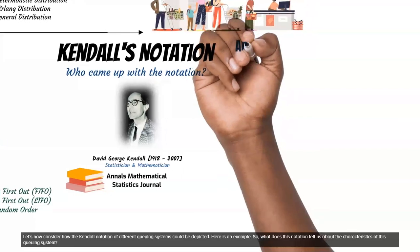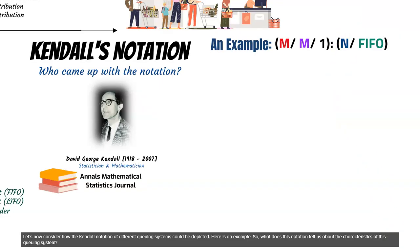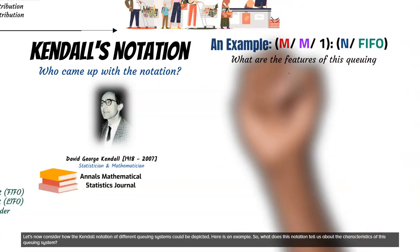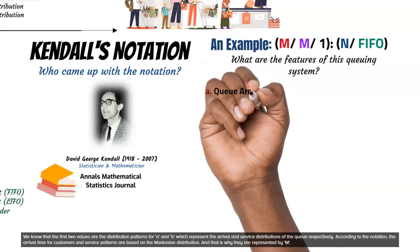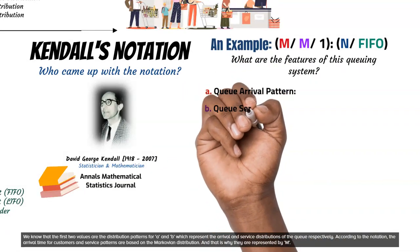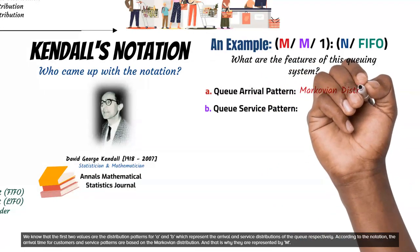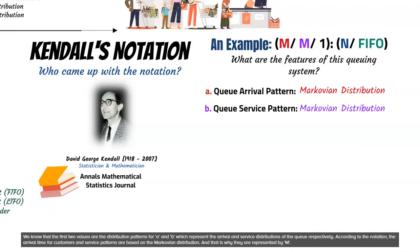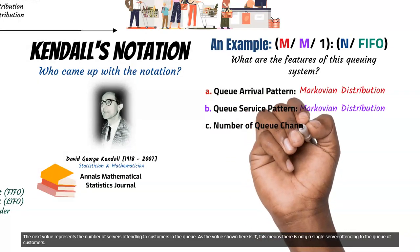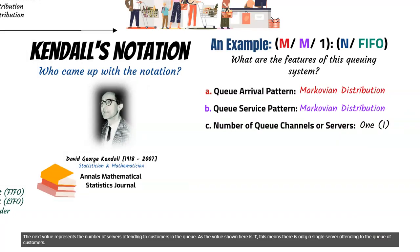Let's now consider how the Kendall notation of different queuing systems could be depicted. Here is an example. What does this notation tell us about the characteristics of this queuing system? We know that the first two values are the distribution patterns for A and B, which represent the arrival and service distributions of the queue respectively. According to the notation, the arrival time for customers and service patterns are based on the Markovian distribution. The next value represents the number of servers attending to customers in the queue. As the value shown here is 1, this means there is only a single server attending to the queue of customers.